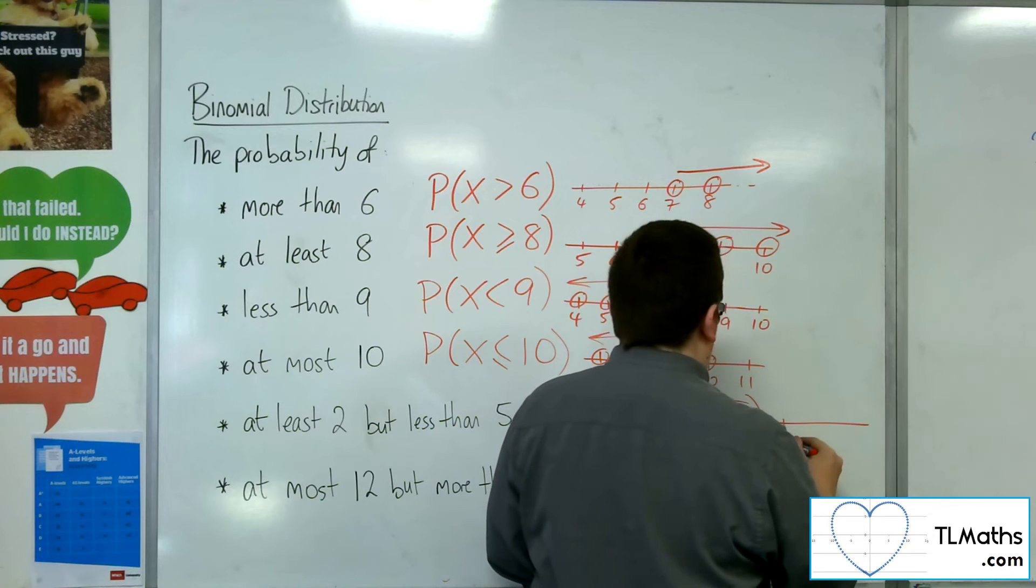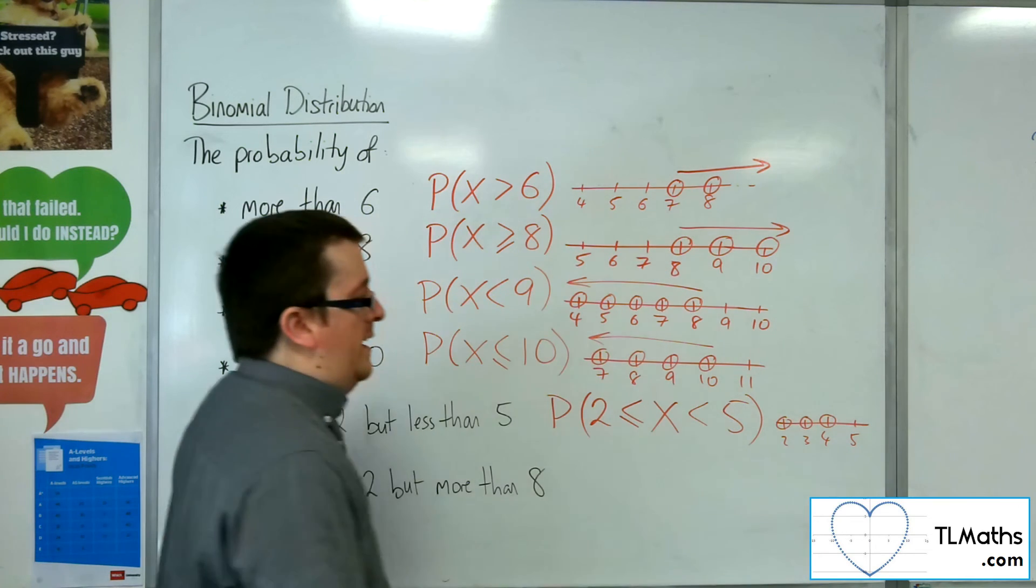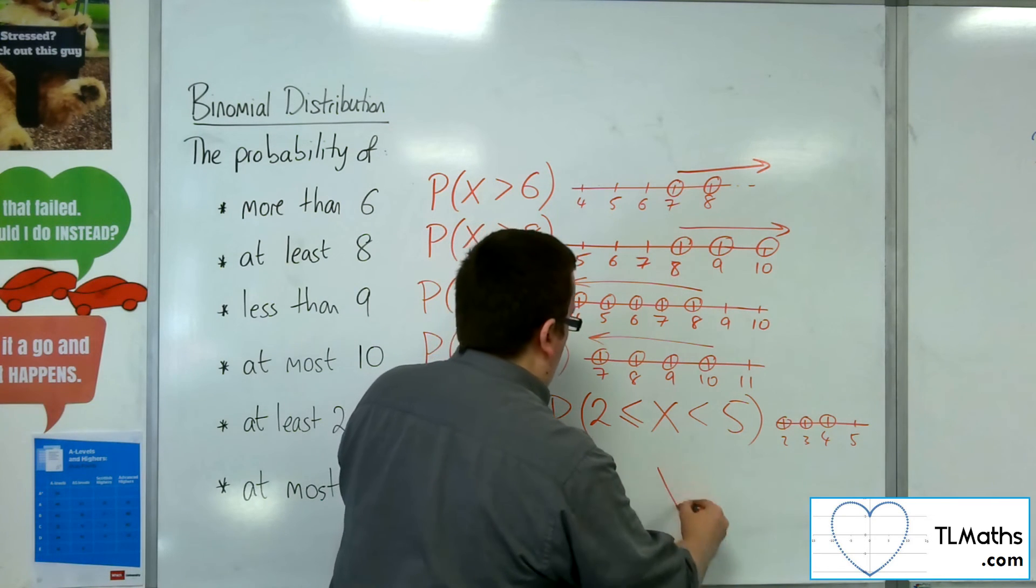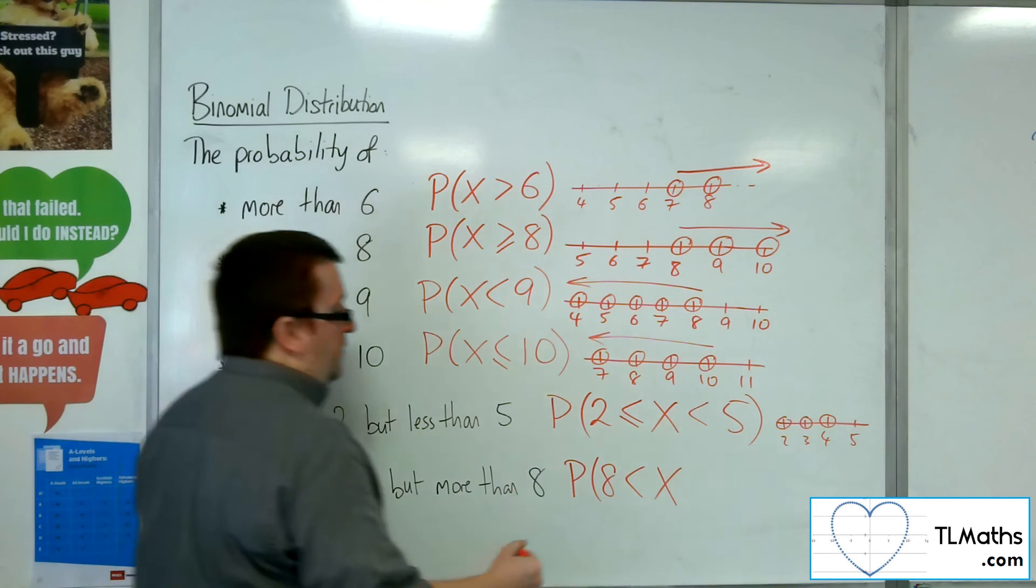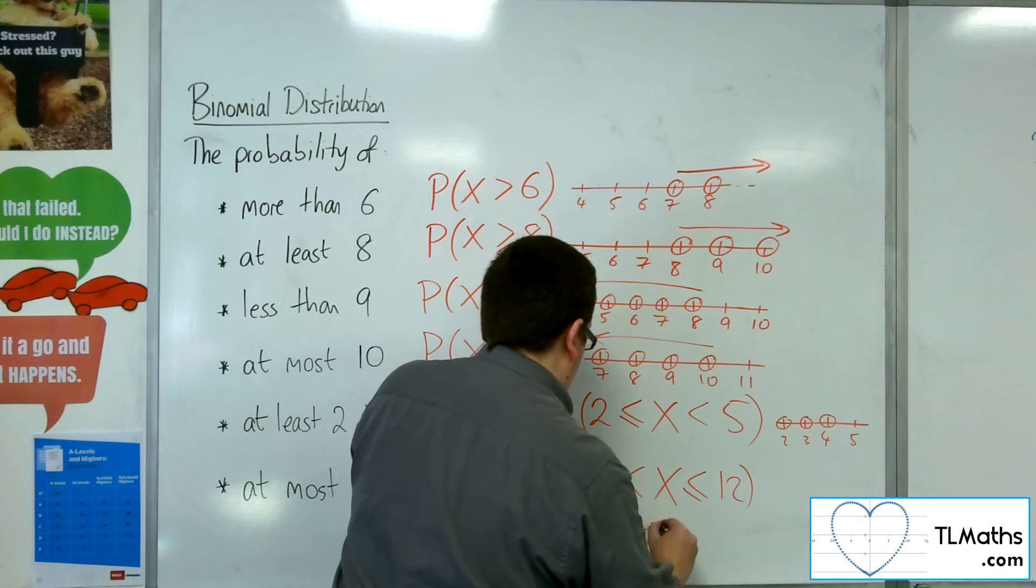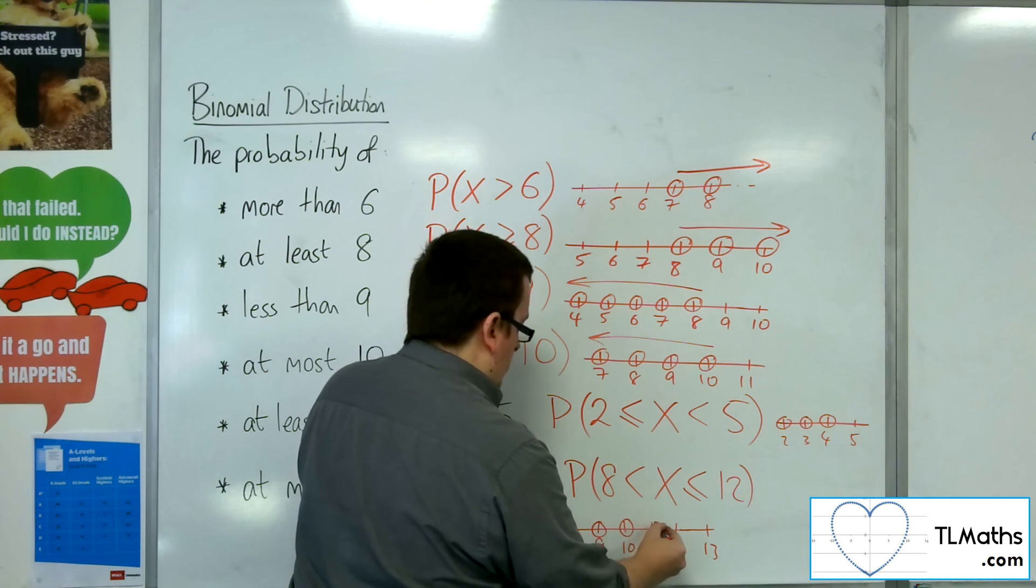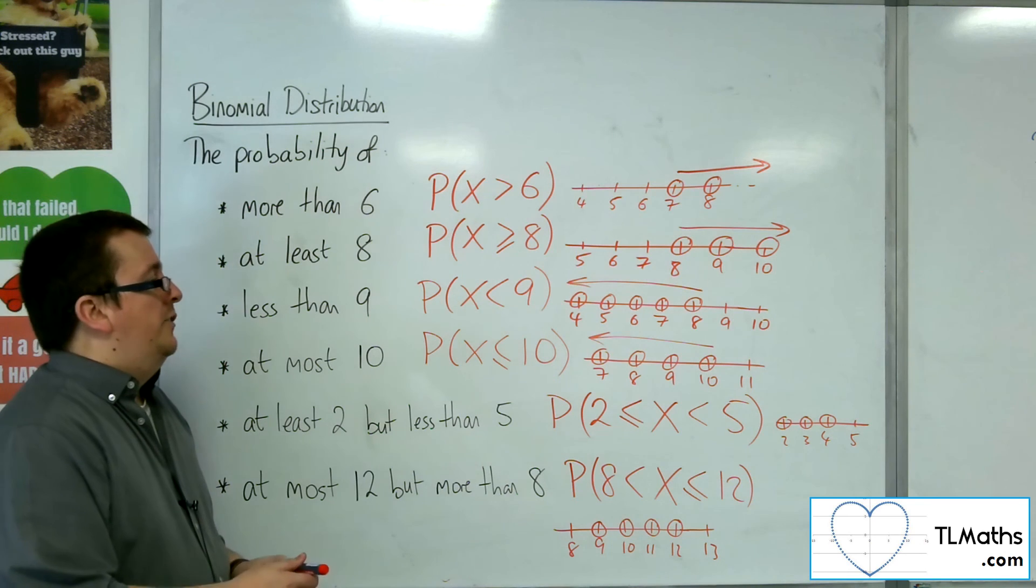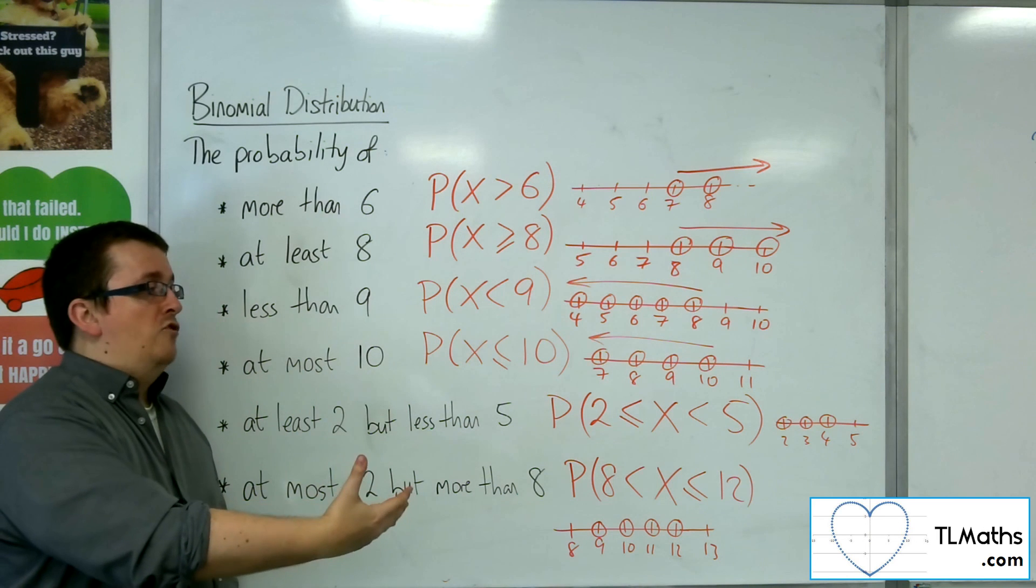So on a number line we'd be looking at 2, 3, 4, 5. I want 2, 3, and 4. 5 isn't included. At most 12 but more than 8. So X is in the middle, so I want more than 8 and I want at most 12. So on a number line, 8, 9, 10, 11, 12, let's go up to 13. So I want more than 8, less than or equal to 12, so it would be specifically those 4. So that's how we can figure out from the wording precisely what the probability is that we are required to find.